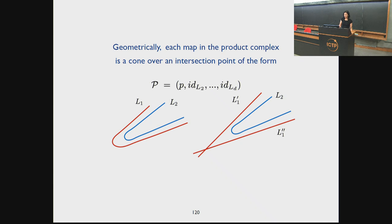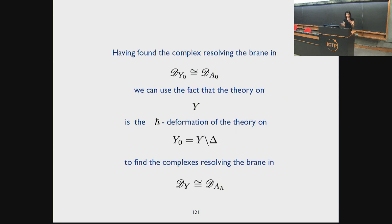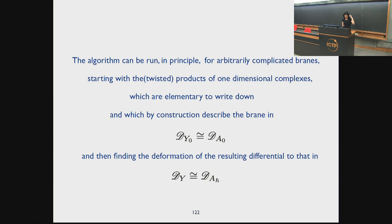Geometrically, each map in this product complex is a cone over an intersection, because being a map in a product complex, it necessarily looks like something non-trivial in one place and an identity everywhere else — it describes a cone over an intersection point that's identity everywhere except in one place. Having found the complex that resolves the brane in the complement of this interesting divisor, finding the complex of the branes you actually want is a deformation problem — a specific deformation problem because we know the algebra. So you get a precise algorithm that you can run in principle. The details of the algorithm Elise will describe tomorrow. You can run it for arbitrarily complicated brains starting with products of one-dimensional complexes, which are elementary to write down, and then running this deformation algorithm, which is iterative in the deformation parameters.